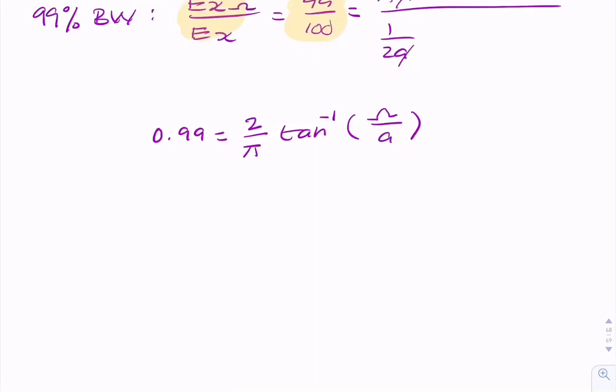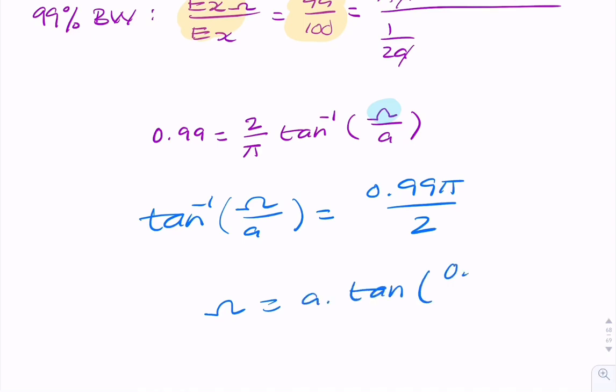Even though we don't know the value for a, we can still solve to find omega. So we can rearrange: tan inverse (omega over a) equals 0.99 pi over 2. And therefore, omega equals a tan (0.99 pi over 2). So I just took tan of both sides. Now, we can actually calculate this, but to do that, you need to make sure that your calculator is in radians.